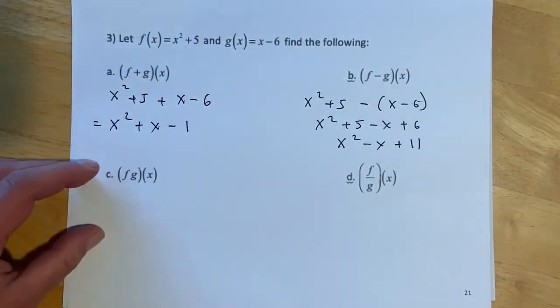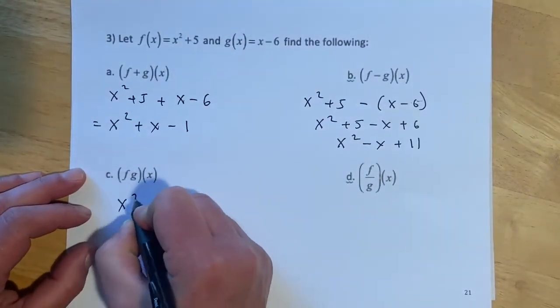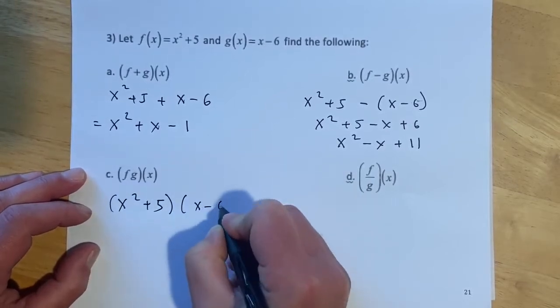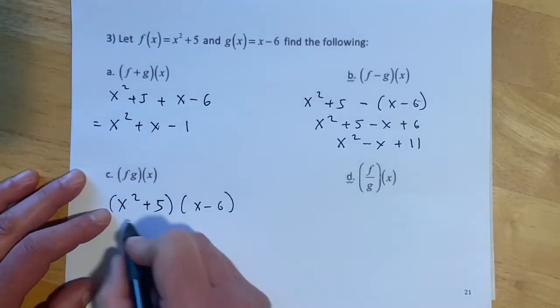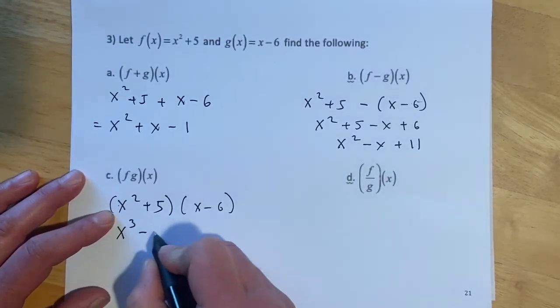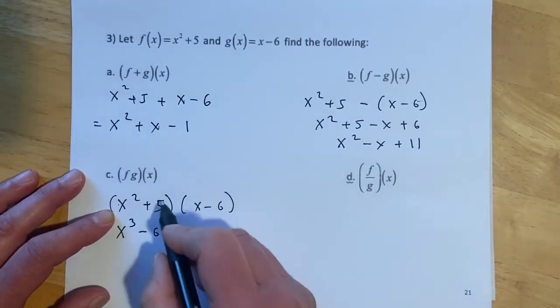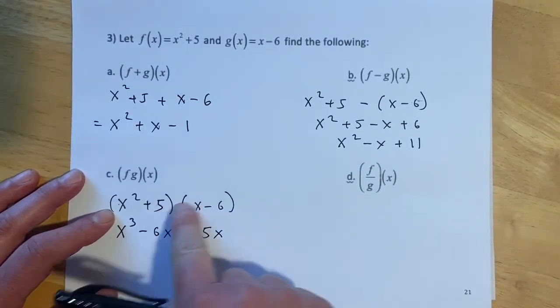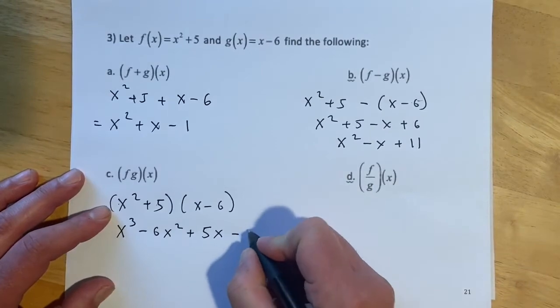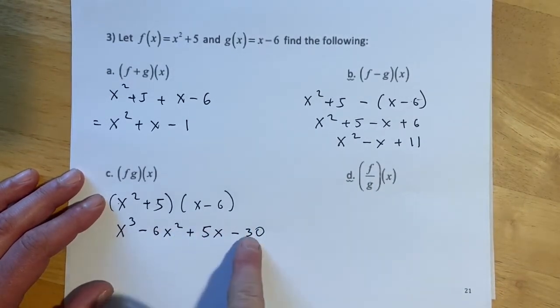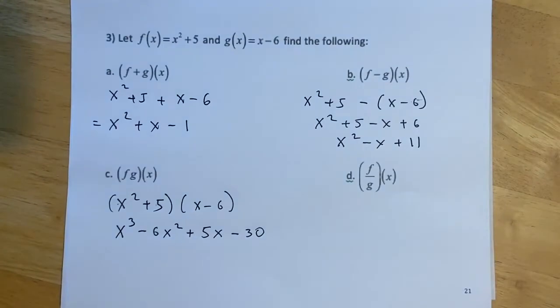f times g. So that's just going to be a foil. x squared times x, x cubed, x squared times negative 6, negative 6x squared, 5 times x, 5x, and 5 times negative 6, so negative 30. And then just double check. There's no like terms. So that's as good as that's going to get.